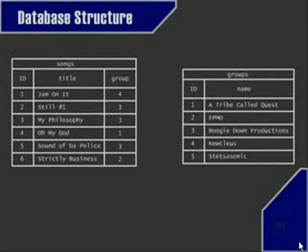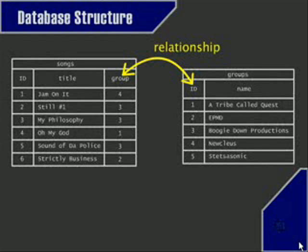Now we have another table, and we can relate them by the relationships between the data on them. In this case, the relationship is groups and songs, because we can have three songs of one group in a table, but we don't have to register the group three times, so we can see the advantages of a well-structured database system. The relationship is one-to-many, because one group can have many songs, but notice that in the other way, the relationship is one-to-one, because a song can only have a single group.